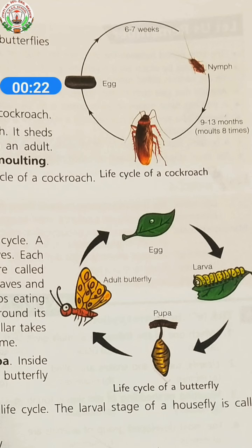A cockroach lays eggs. The egg hatches into a nymph, or baby cockroach. A nymph is similar to an adult cockroach. It sheds its skin many times while growing into an adult. This repeated shedding of skin is called molting.